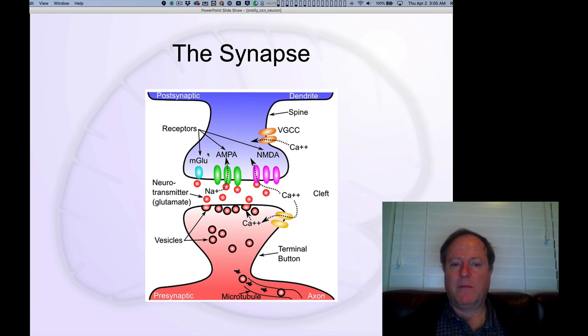So here's a diagram of the synapse. You have here on the bottom the presynaptic or sending neuron. This is an axon, and it has this thing called a terminal bouton. You might think that's a button, but it's a bouton.